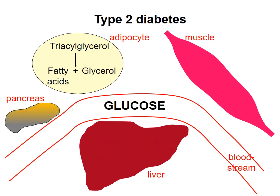Type 2 diabetes typically arises later in life in a person whose insulin response was effective when they were younger. Why some people develop type 2 diabetes is not completely understood, but genetic factors likely play a role. Other risk factors include advanced age, being overweight, and having a sedentary lifestyle.